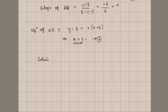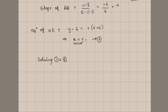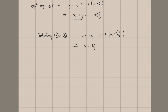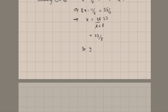Solving equation 1 (y - 11/2 = -7(x - 5/2)) and equation 2 (y = x): substituting x in place of y in equation 1 gives x - 11/2 = -7(x - 5/2). Solving: x + 7x = 35/2 + 11/2, so 8x = 46/2 = 23, giving x = 23/8. And since y = x, y is also 23/8. So the circumcenter is (23/8, 23/8).